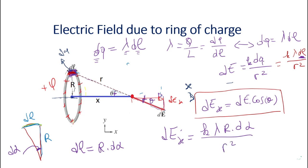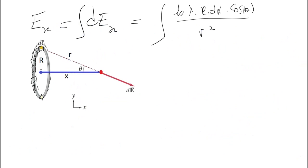Now we look for the total electric field, not just the element. The total electric field produced by this ring on the x-axis is the sum of all elements dE_x on the ring, which equals the integral of k·lambda·R·dAlpha·cosine(theta) over r squared.